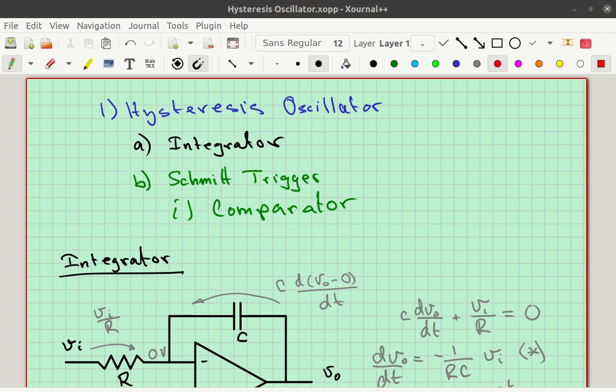Welcome. I'm Rob Froney, and I'm here to tell you about hysteresis oscillators. A hysteresis oscillator is made up of two circuits. These are op-amp circuits. The first one is an integrator, and the second one is called the Schmidt trigger, sometimes called the comparator with hysteresis, and the comparator with hysteresis is a modified comparator, so we'll need to look at all three of those circuits to understand what's going on.